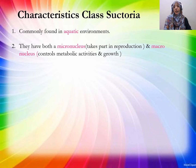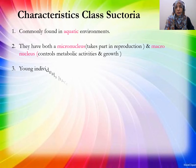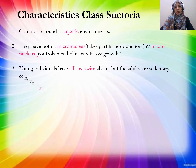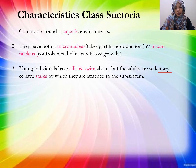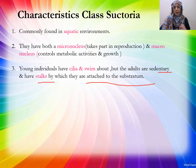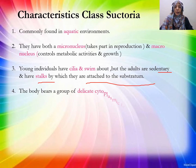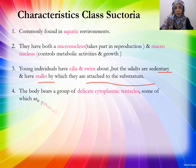Suctoria are found in aquatic environments. They have both micronucleus and macronucleus. The macronucleus controls metabolic activities and growth. When young, they swim in water using cilia, but when mature they develop a stalk which attaches to one place, and they have delicate cytoplasmic tentacles.